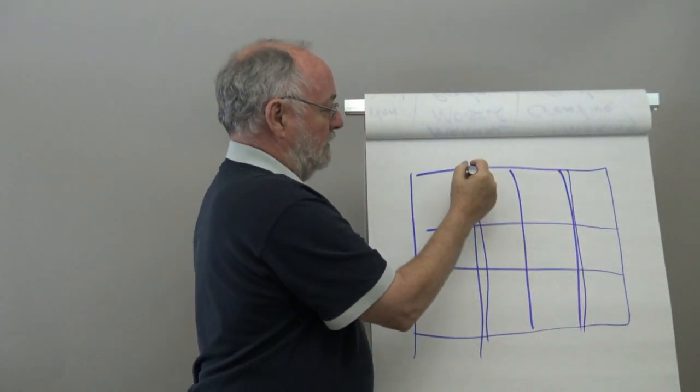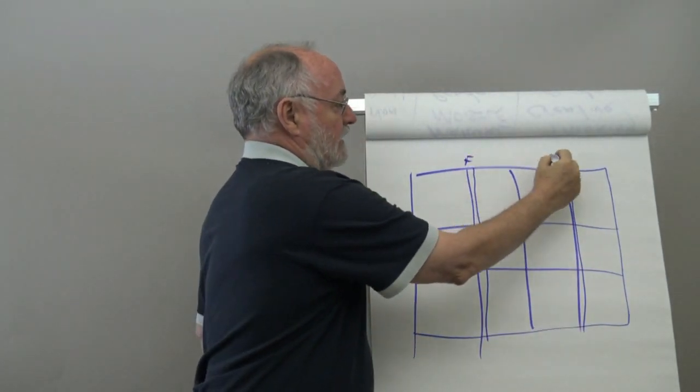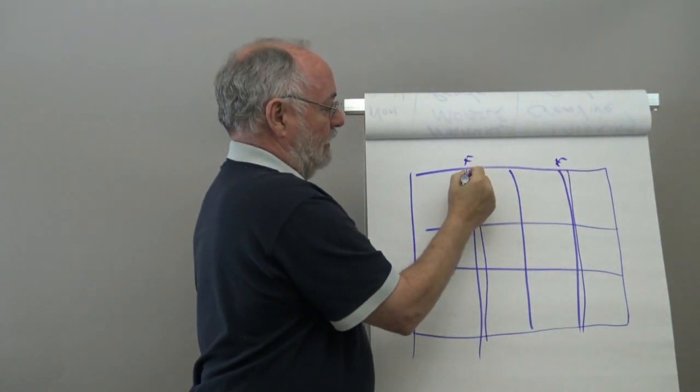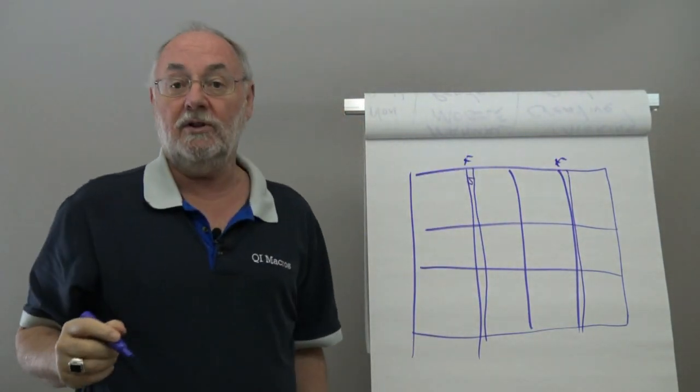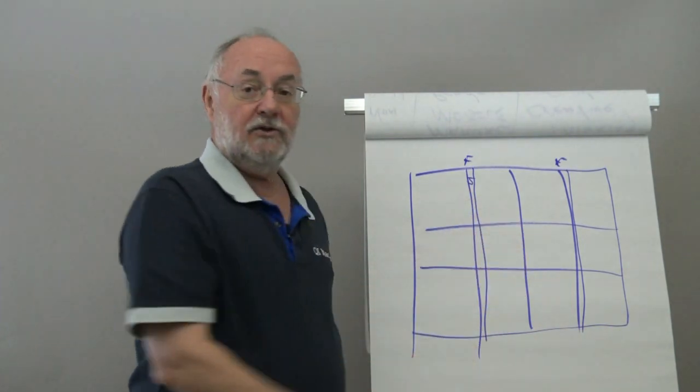And so we might come up with feasibility and effectiveness. And we might rate it from one to five. So we might have numbers that go in there. We might have words that go in here.